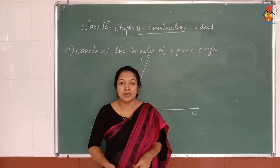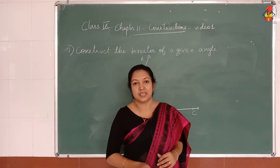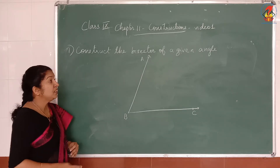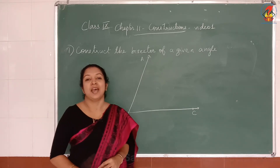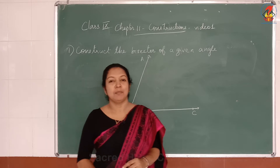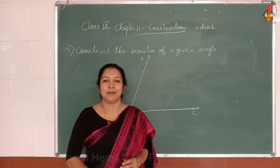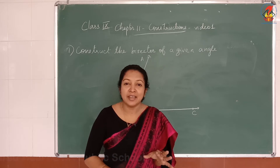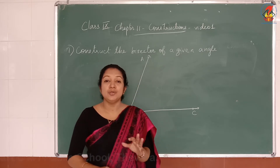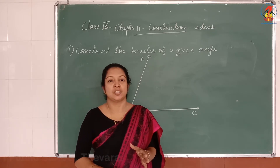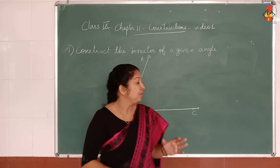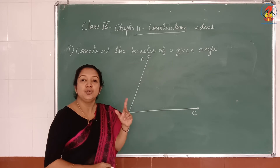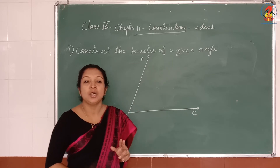Chapter 11: Constructions. The first question is to construct the bisector of a given angle. What do you mean by bisector? It is a line that divides the angle into two equal parts. So we have to divide this angle into two angles of equal measure.